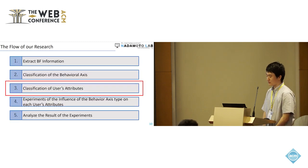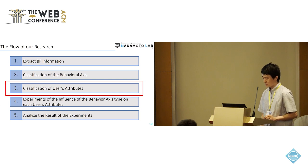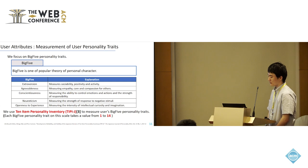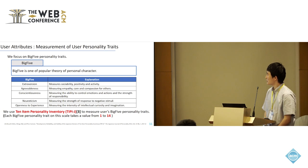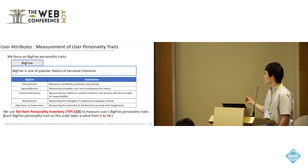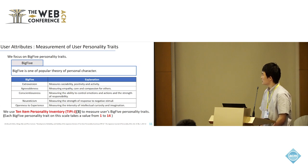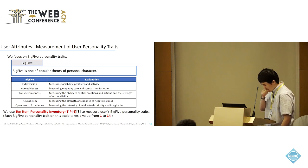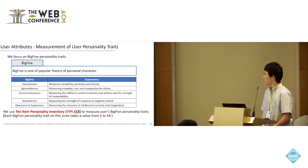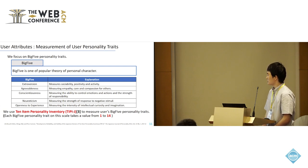Next, I will talk about the classification of user attributes. We focus on the Big Five personality traits as the user attribute. The Big Five is one of the popular theories of personality characteristics, made up of: extraversion, agreeableness, conscientiousness, neuroticism, and openness to experience. Please look at the table — it shows each Big Five personality trait and its explanation. We use the 10-Item Personality Inventory to measure each user's Big Five personality trait, and each trait takes a value from 1 to 14.